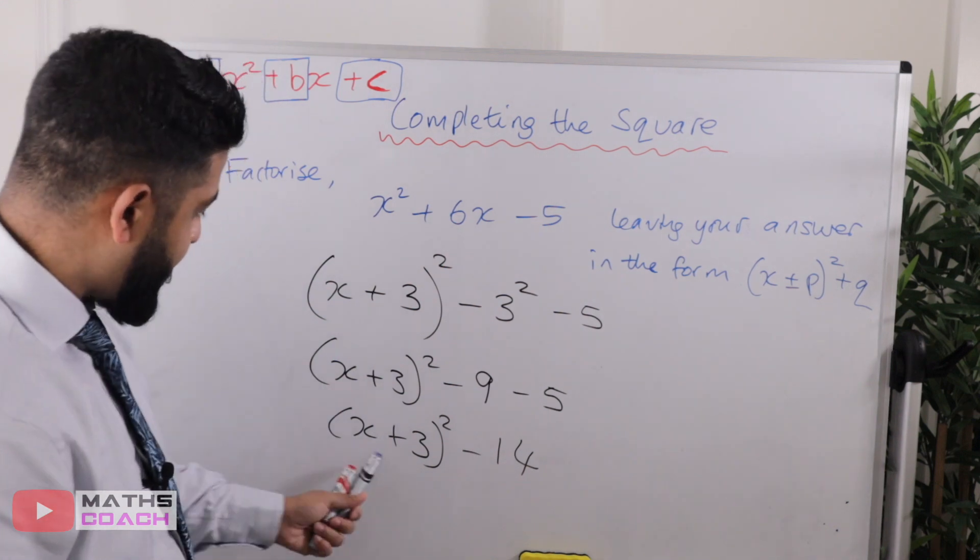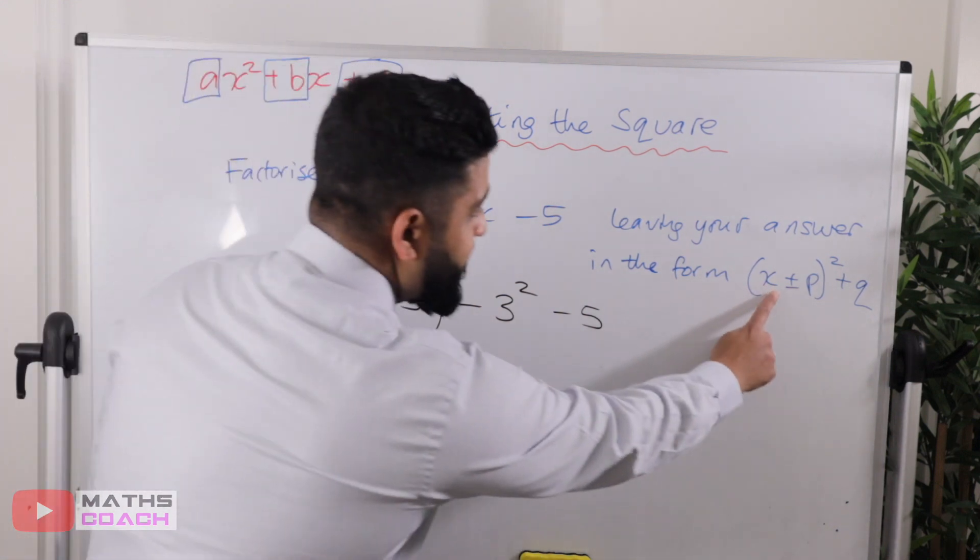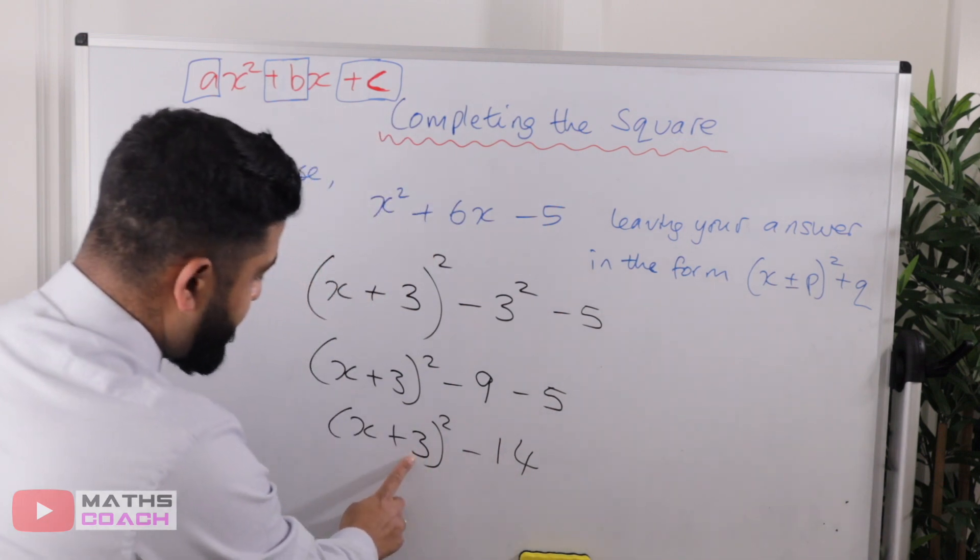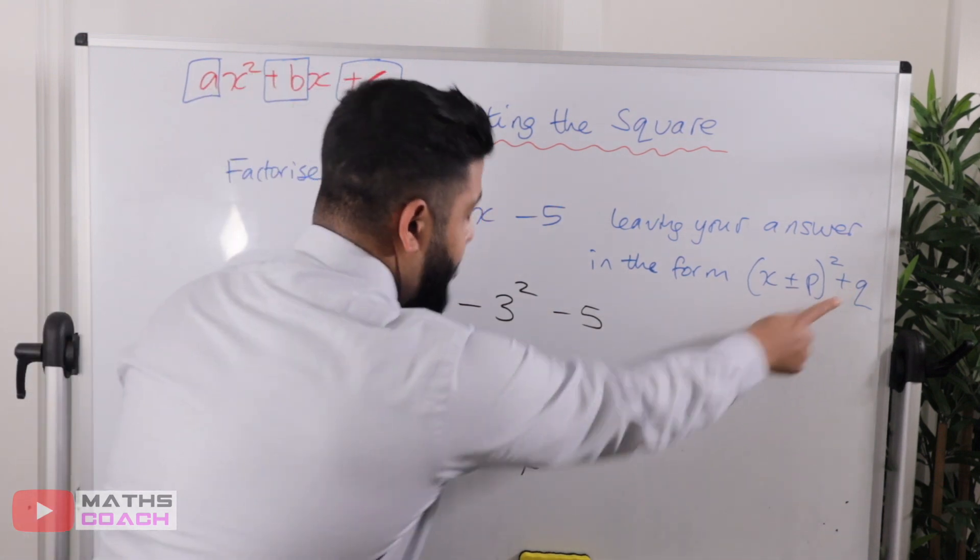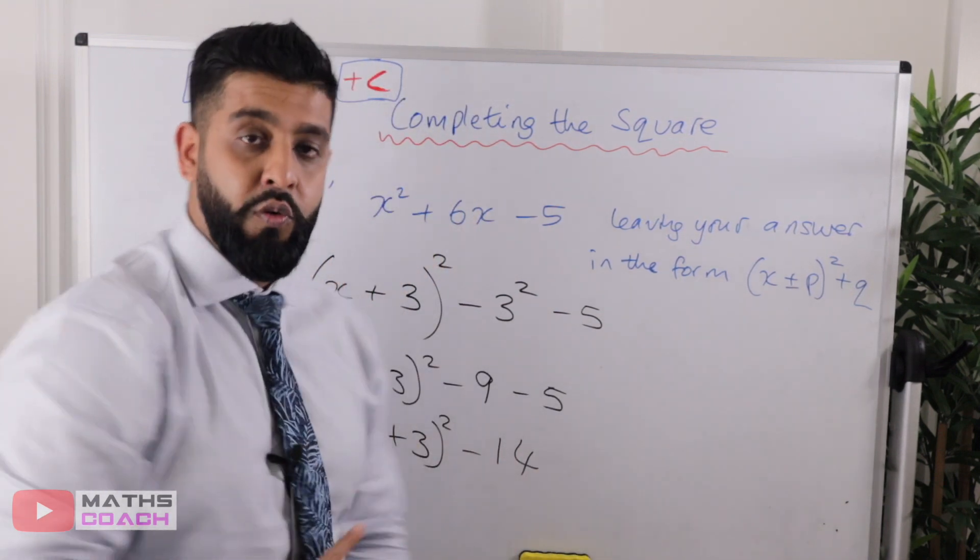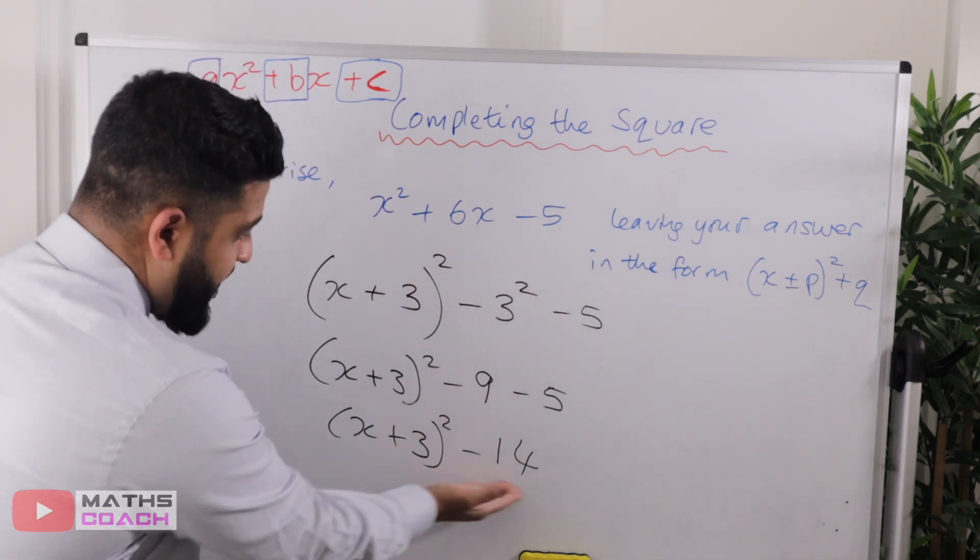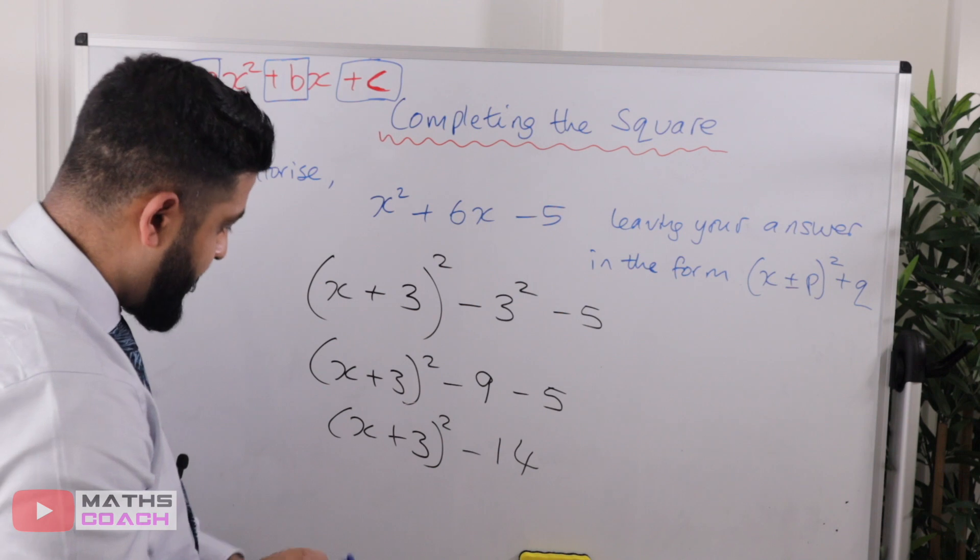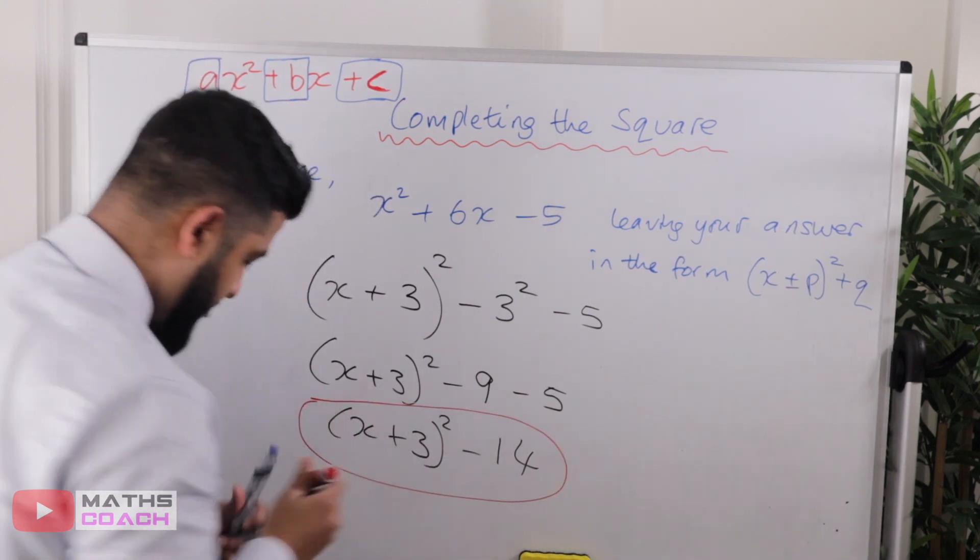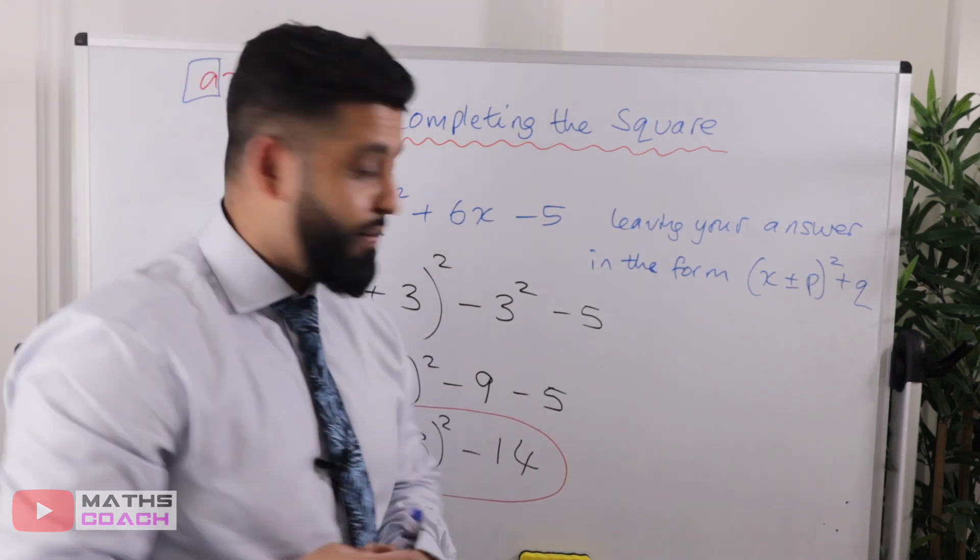So x plus three squared minus fourteen. As you can see, our p value here is plus three and our q value is minus fourteen. So we have factorized x² + 6x - 5. And here is our final answer. Let's go on to the next example.